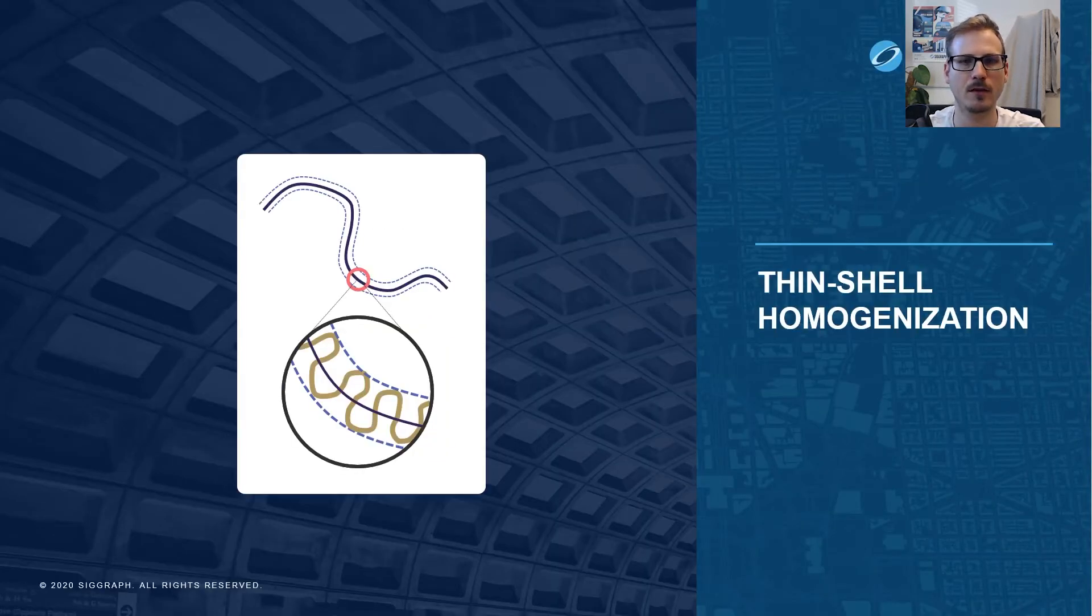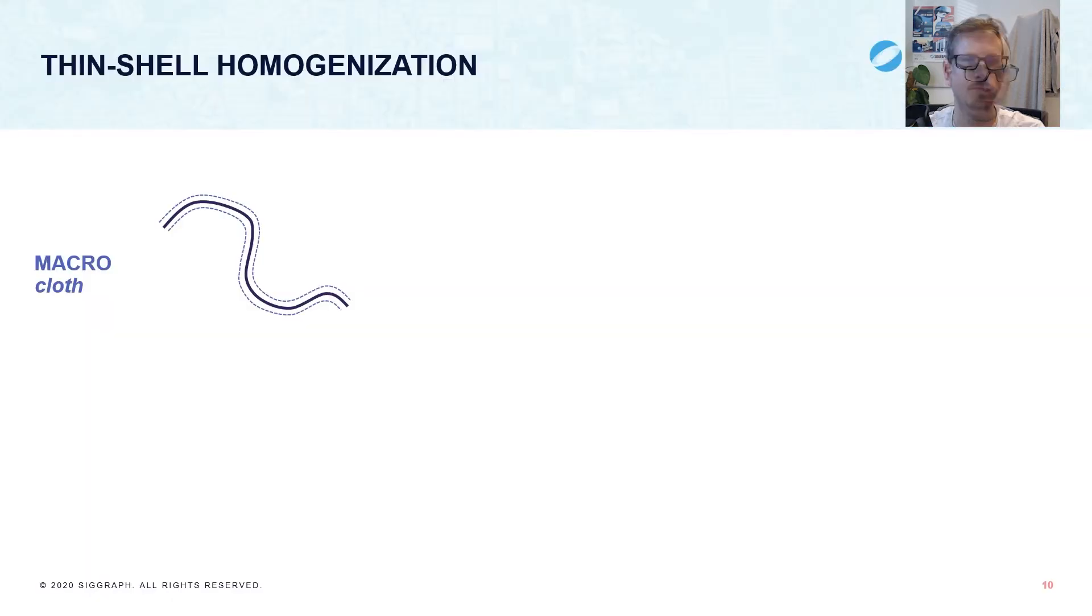We'll begin by looking at homogenization. Our goal here is to develop a strategy to get a cloth-scale energy density value from a yarn-level simulation. On the macro scale, the cloth is modeled as a thin shell, illustrated here in 2D by a mid-surface with a thickness to it. At every point, we can measure the local deformation using the first and second fundamental forms, where the first fundamental form, one bar, describes in-plane stretching and shearing, and the second fundamental form, two bar, describes bending. We also have an energy density, psi bar, at that point, measuring the elastic response to the deformation. We use bar notation here to denote quantities on the cloth scale as compared to quantities on the yarn level.